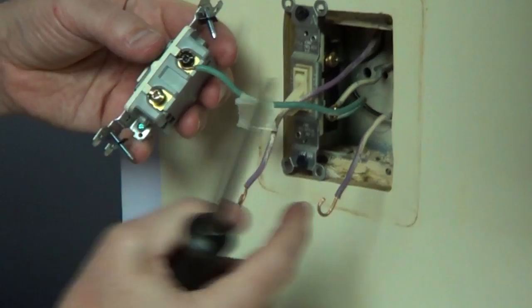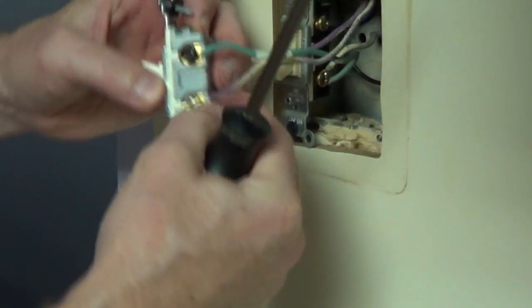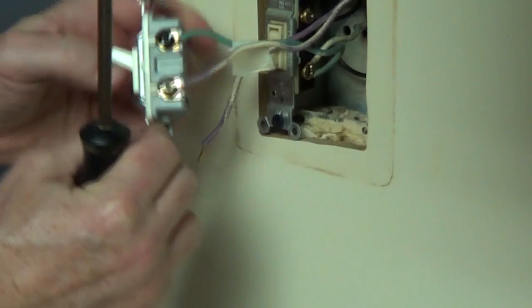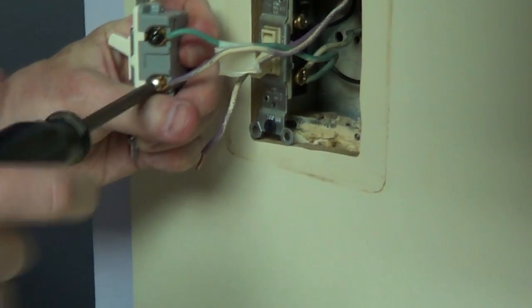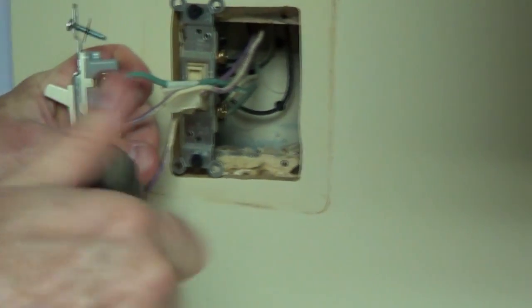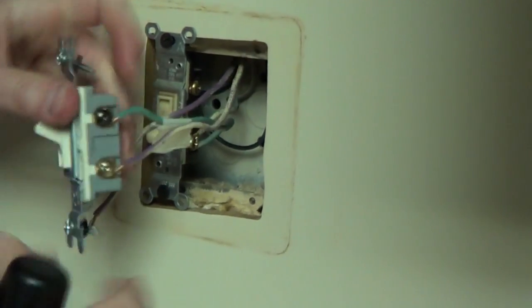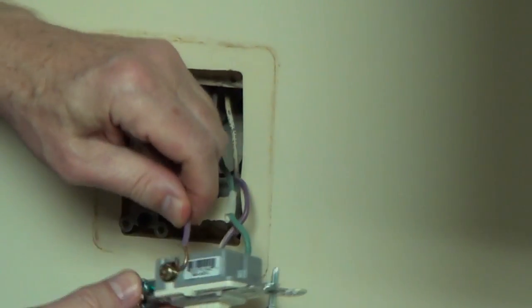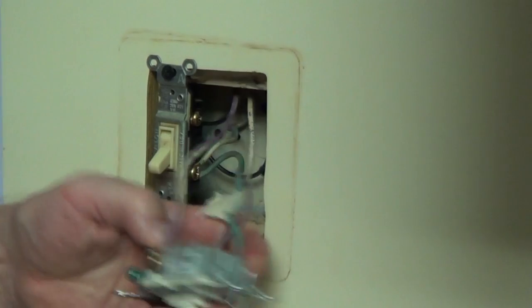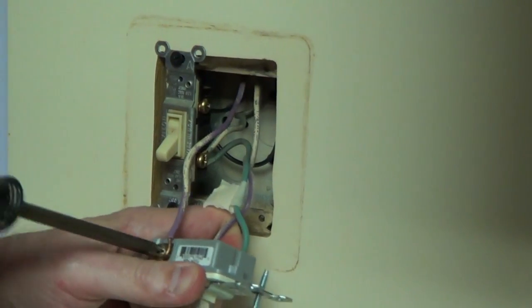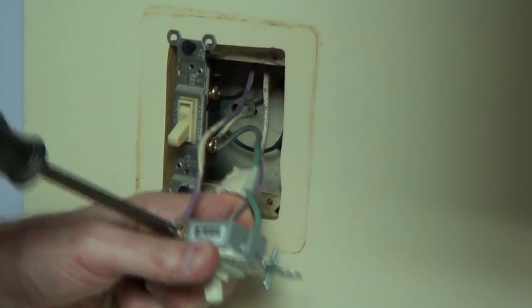Now the other two wires are our travelers. These wires go to the other three-way switch, and it doesn't matter which screw terminal you put them on. Just connect them and make sure you hook it in a clockwise direction. That's all there is to connecting the new three-way switch.